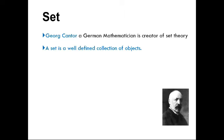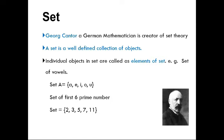The set concept was given by George Cantor, a German mathematician who created set theory. So what is a set? A set is a well-defined collection of objects. For example, if I want to create the set of vowels, then a, e, i, o, u makes the set of vowels, and all the objects in a particular set are known as elements of the set.